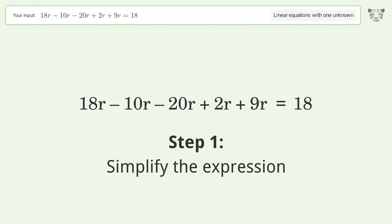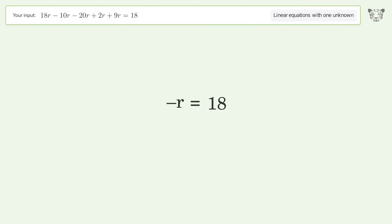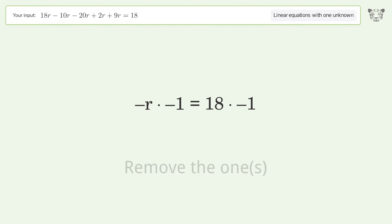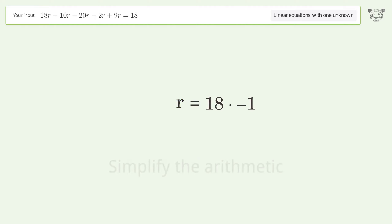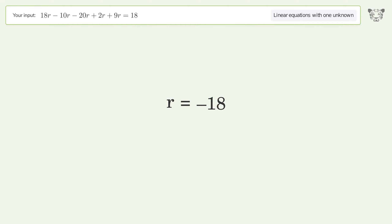Simplify the expression, combine like terms. Isolate the r — multiply both sides by negative 1. Remove the ones and simplify the arithmetic. And so the final result is r equals negative 18.